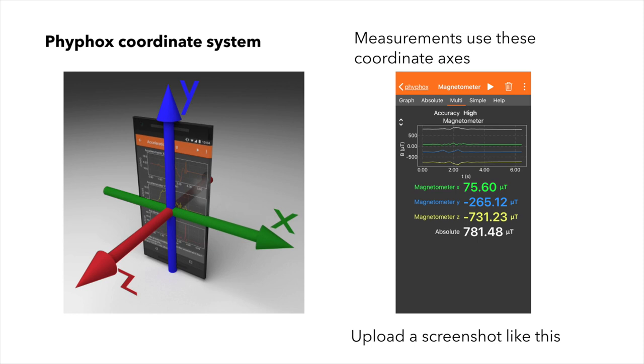For example, here the magnetometer is registering a strong negative value along the z axis, and therefore the field must be extending out the back of the phone as shown here. Note that your data should not be values like this.